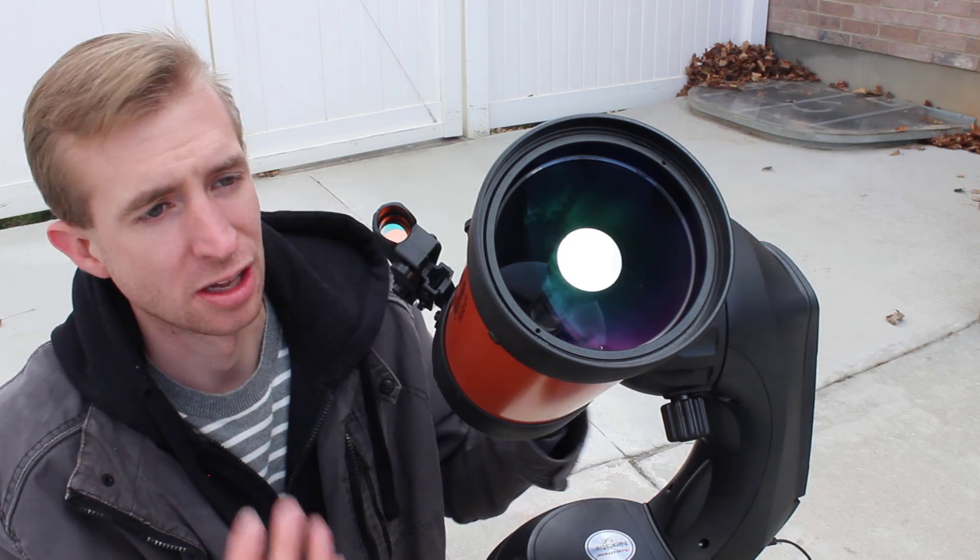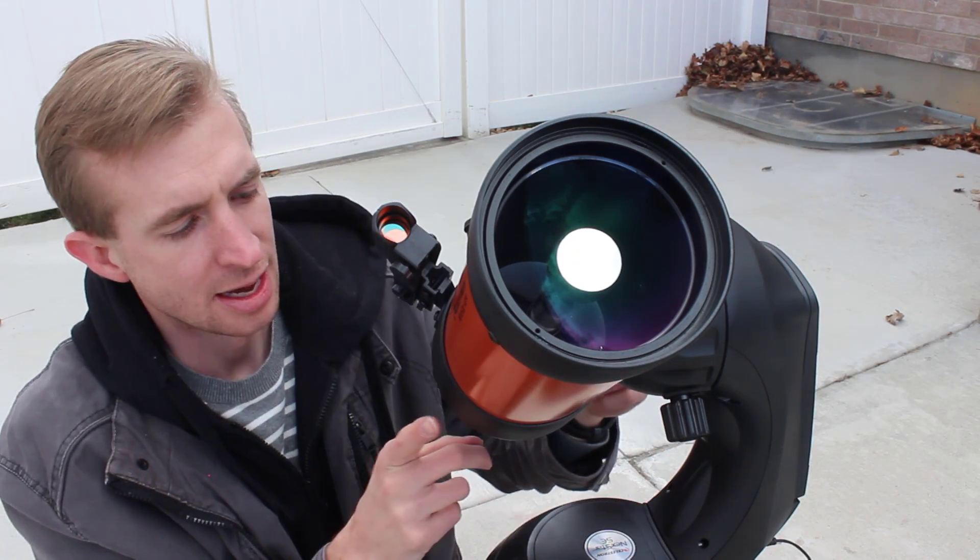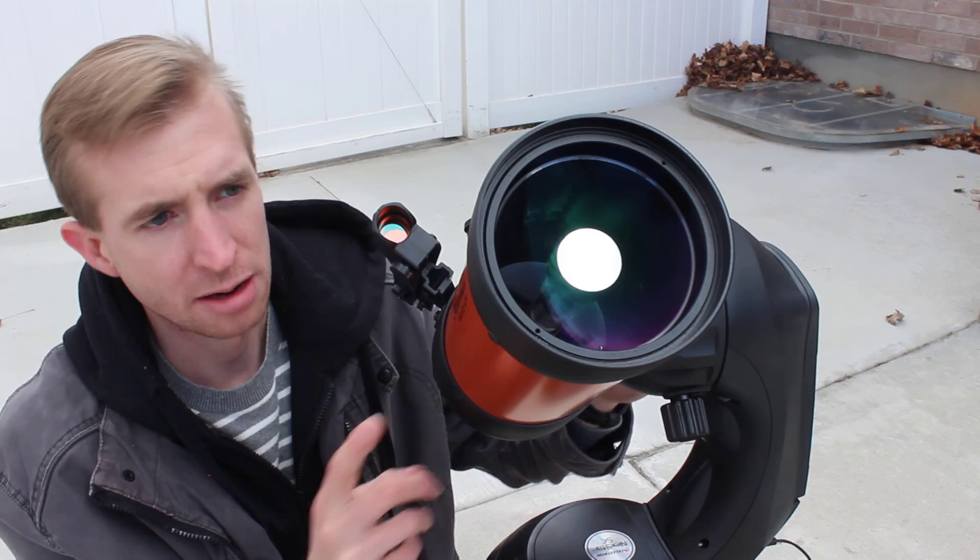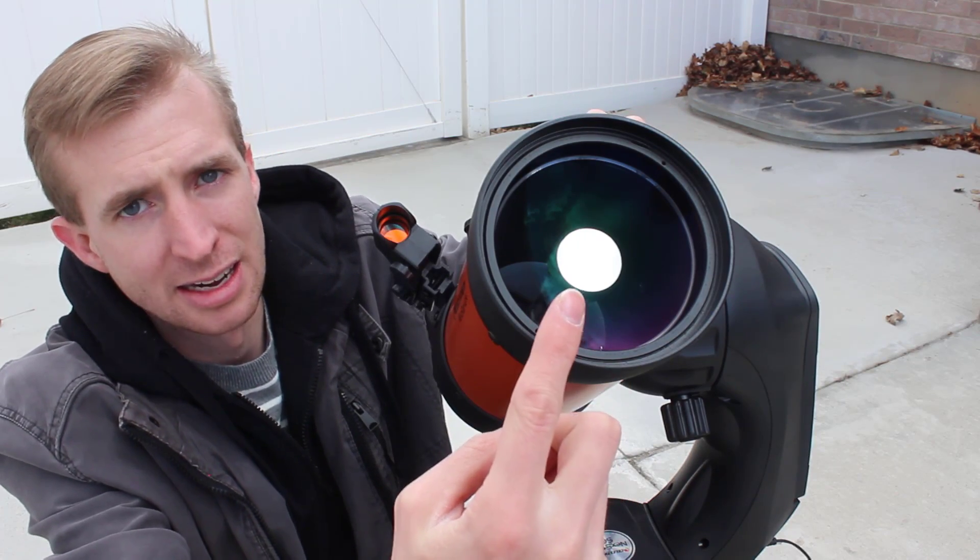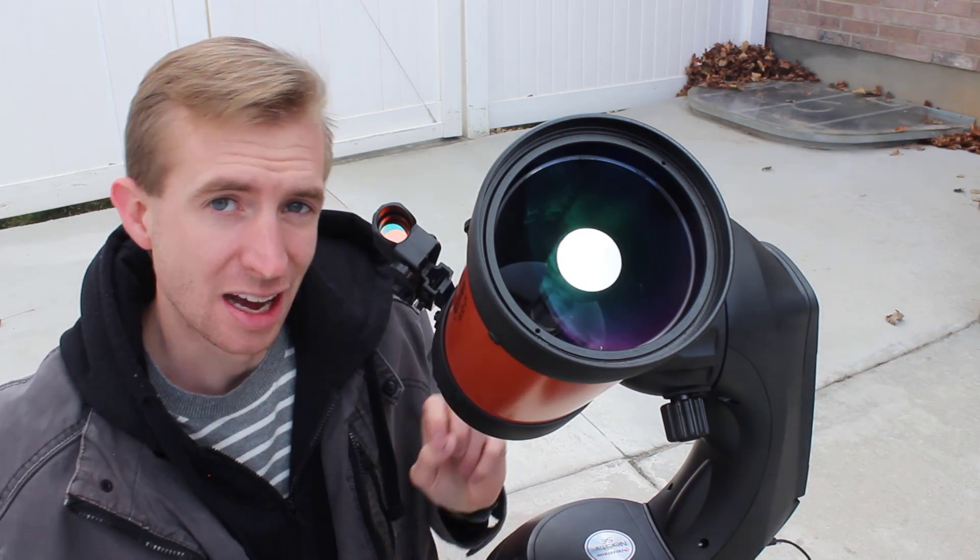Essentially the way this telescope works is the light comes in and passes through this big Maksutov corrector lens and hits the primary mirror. That reflects the light back to the secondary spot, and then the secondary spot reflects it back down through the tube and into the eyepiece.